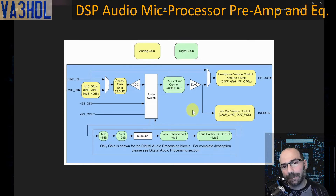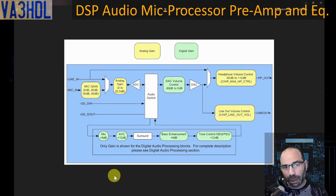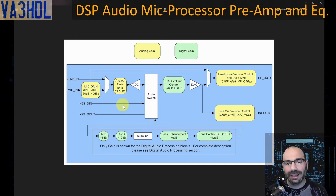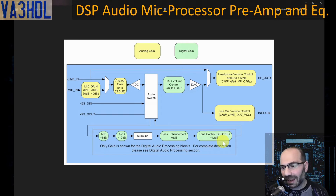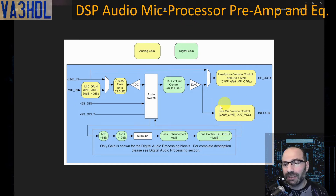Inside the chip itself, those are the high-level block diagrams. There are things we will use on this project, like the mic input — we will use this and set up the gain for the microphone. We will use the automatic volume control. We will also use the tone control section, because that is where the graphical equalizer resides — the 8-band graphical equalizer created in this project. And we will use the line-out volume control that is going to fit our radio.